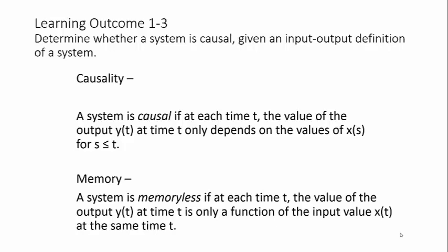Let's compare the definition of causality with the definition of memory. They're the same, except for the name of the property. At each time, the value of the output y(t) at time t. Now here, they start diverging. Depends on the value x(s) instead of x(t) for s less than or equal to t. Whereas here, our x argument had to be the same as our y argument.